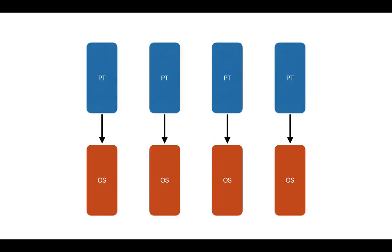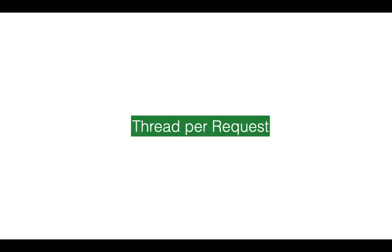Every statement or method execution in Java happens in a thread as a part of a request. These threads, which are called platform threads, are wrappers around the OS threads. And so every request in Java equates to a platform thread, which equates to an OS thread. OS threads are costly to create and are finite in number, so concurrent requests in Java, each consuming an OS thread, is limited to the number of OS threads. So this thread-per-request model is how Java works — it allows a context for requests.